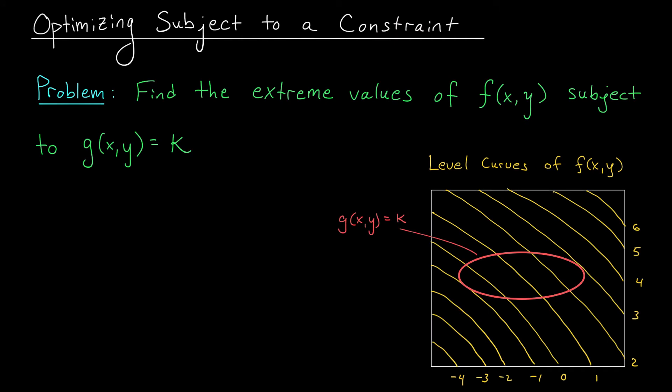All right, so once again, we're looking for the extreme values of our function, but of course, we're dealing with a constraint here. The constraint is that the points we're going to consider have to lie along this boundary curve, right? They have to satisfy a certain equation in order to be considered. That equation we could write as g(x,y) is equal to some constant k. So, for example, in our last slide, that constraint could be written as x squared over 4 plus y squared equals 1. We're only looking at the points that satisfy this equation.